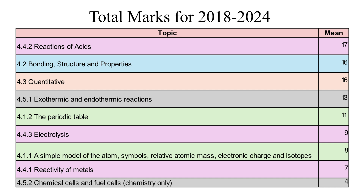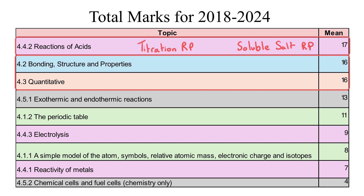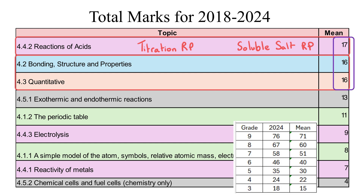Three of the topics on Paper 1 separate out naturally into slightly smaller sections, and when we do that we can see that one of those sections really stands out — that's the reactions of acids section from Topic 4, which includes the titration required practical and the soluble salt preparation required practical. On average this content is worth 17 marks out of 100 each year, and then bonding and quantitative chemistry are tied at 16 marks each year. Those three sections together are worth a total of 49 marks — nearly half of the paper — which would have been enough for a grade 6 on average, even in 2024 when grade boundaries were higher than average.